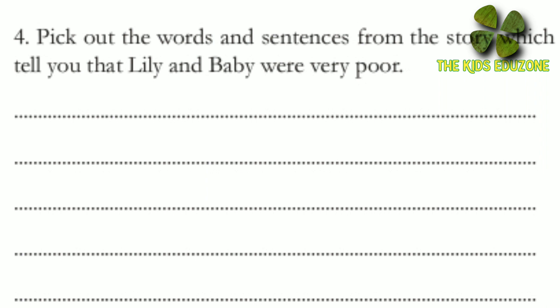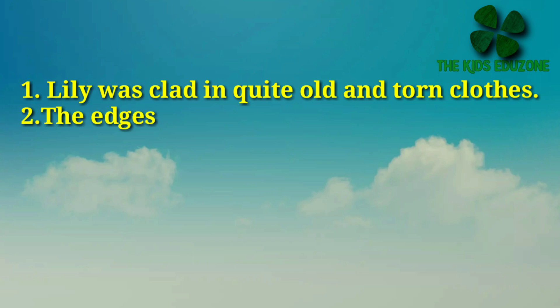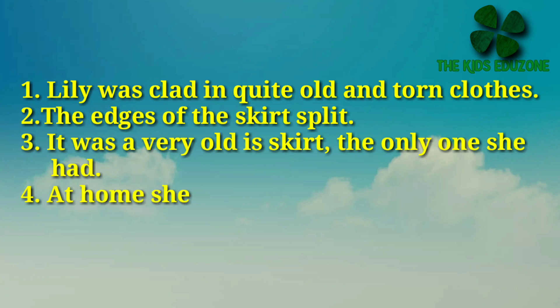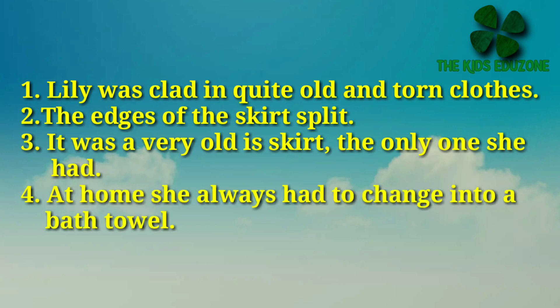The fourth question: pick out the words and sentences from the story which tell you that Lily and Baby were very poor. The first sentence is: 'Lily was clad in quite old and torn clothes.' Then: 'The edges of the skirt split.' Third: 'It was a very old skirt — the only one she had.' And: 'At home, she always had to change into a bath towel.' These sentences tell us that Lily and Baby were very poor.